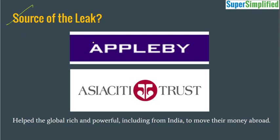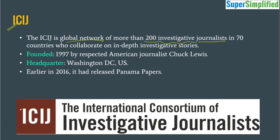What is the source of the leak? The source is two companies — as we said, Applebee based in Bermuda and Asia City Trust based in Singapore. They allegedly helped the global rich and powerful, including from India, to move their money abroad. Now, what is ICIJ? The full form of ICIJ is International Consortium of Investigative Journalists. It is a network of more than 200 investigative journalists in 70 countries who collaborate on in-depth investigative stories. In India, Indian Express was a part of this network. It was founded in 1997 by respected American journalist Chuck Lewis.